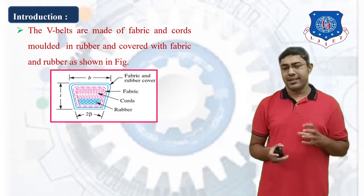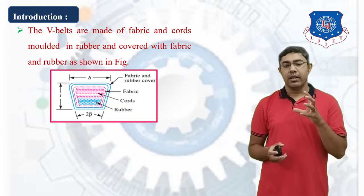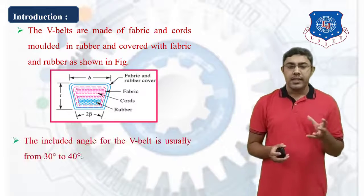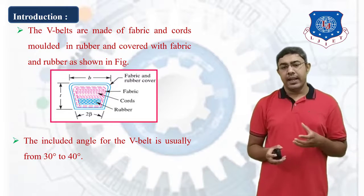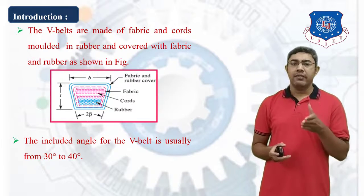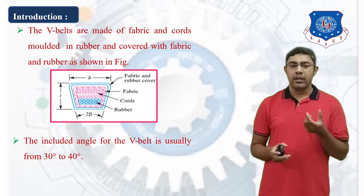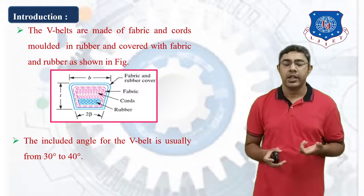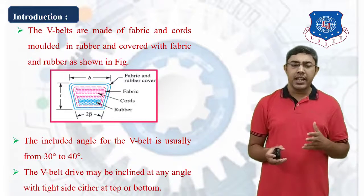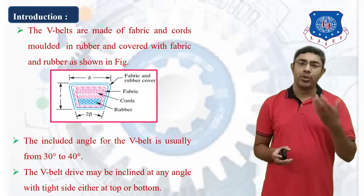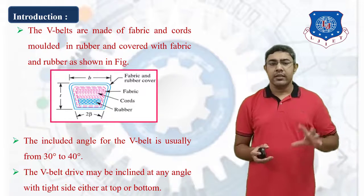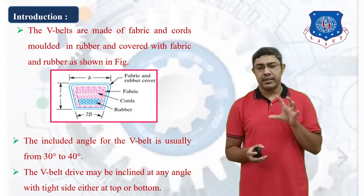This is the construction of V-Belt. The angle of groove is 2-beta. The inclined angle of V-Belt is usually from 30 degrees to 40 degrees. The V-Belt Drive may be inclined at any angle with the tight side either at the top or bottom.